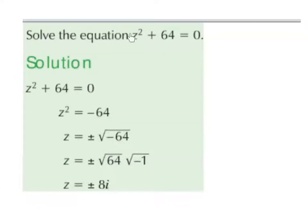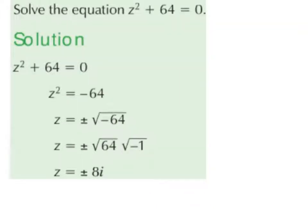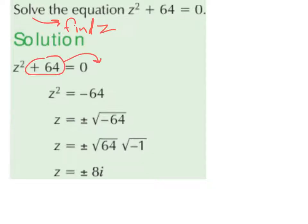Solve the equation z squared plus 64 equals 0. Solve means find z, or get z on its own. So we have z squared plus 64 equals 0. We bring the plus 64 over the equal sign — it becomes minus 64. So we have z squared equals minus 64. Next we bring the squared over the equal sign — it becomes the square root. So we get z equals plus or minus the square root of minus 64.